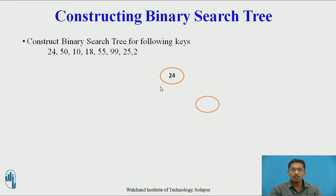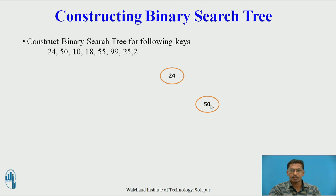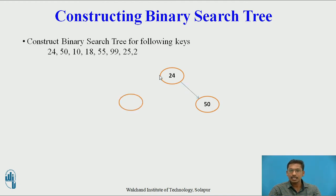Next node is 50. 50 is having value greater than 24, so 50 should be present on the right subtree of 24. Next node is 10. 10 is having value less than 24, so 10 is present on the left subtree of 24.